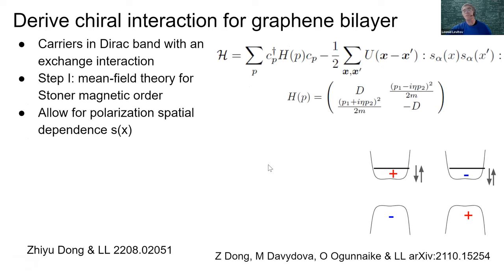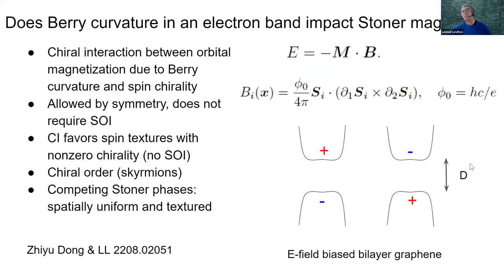Let's dive into some details. To derive the chiral interaction, I want to consider a two-band model — something like a Dirac band model for a graphene bilayer in one of its valleys. Here g is the gap parameter induced by an external electric field perpendicular to the plane.